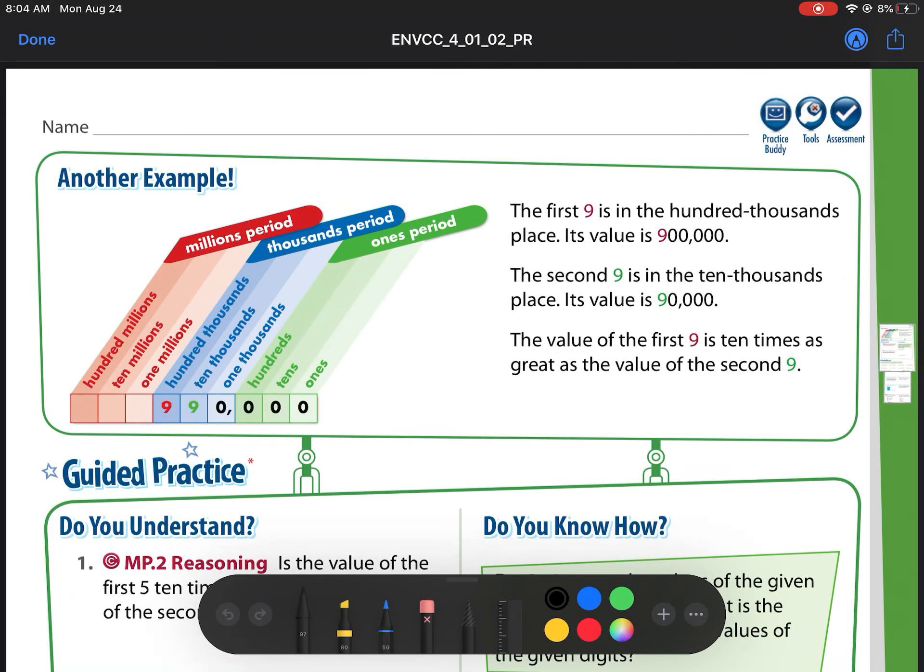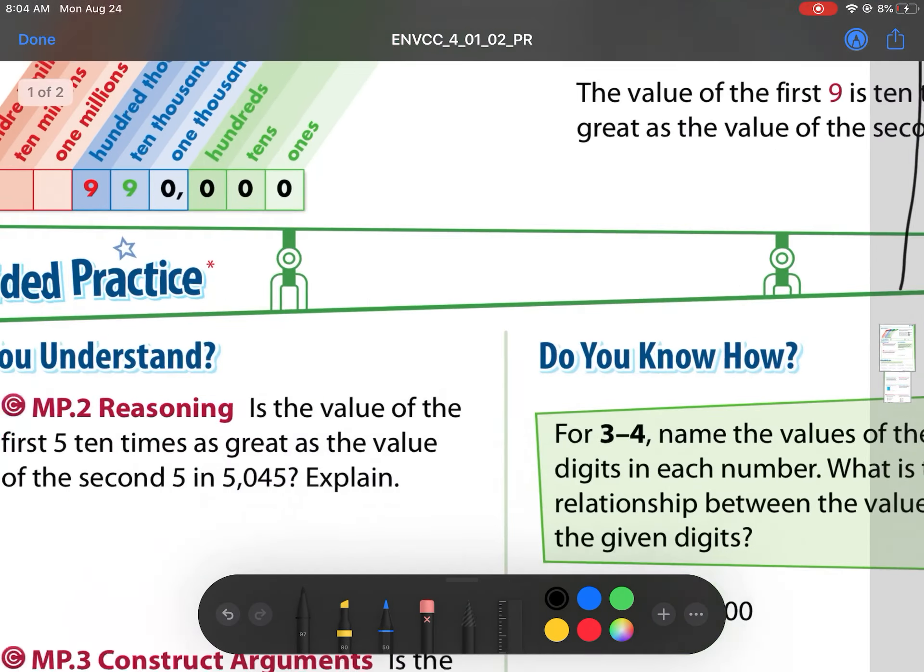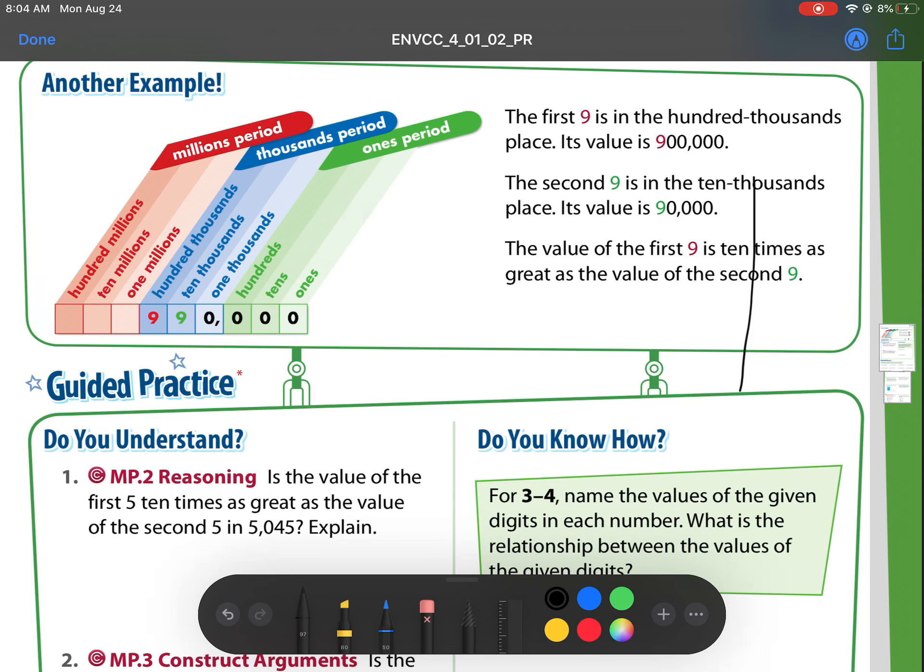So we're on lesson 1-2, guys, still working on place value. Let's look at our first problem. We have this review up here. Remember our place values are broken into periods, so every group of three is a period. This is my ones period. The next three are blue, which are my thousands period. The next three, we have red, which are my millions period. So remember a period is a group of three numbers between those two commas.